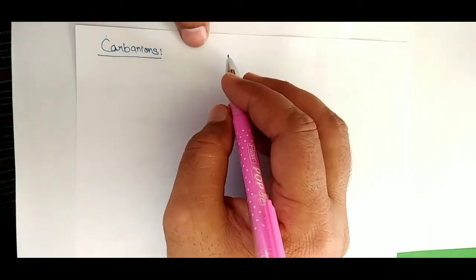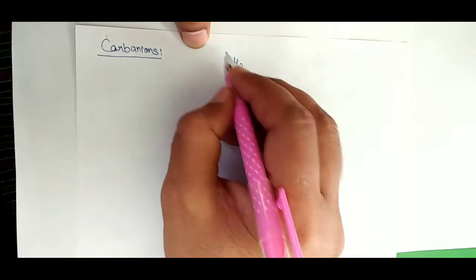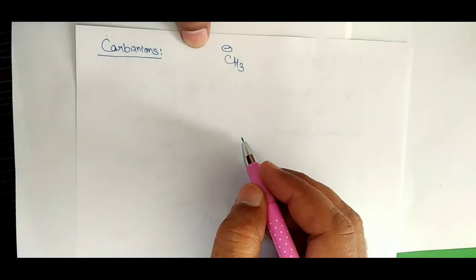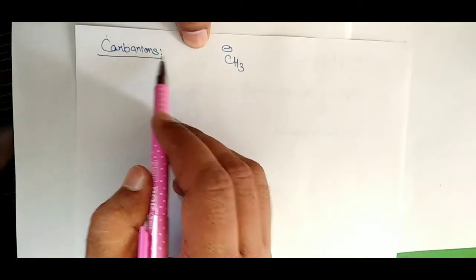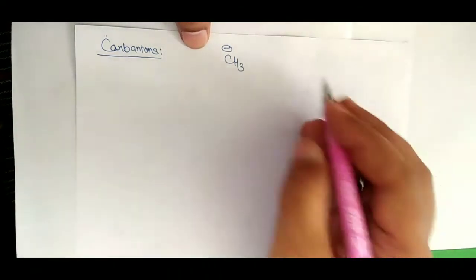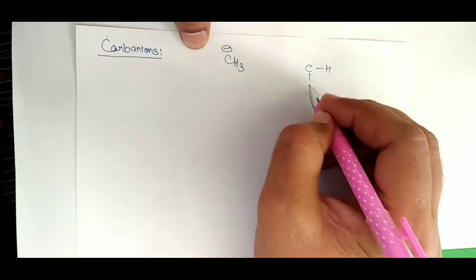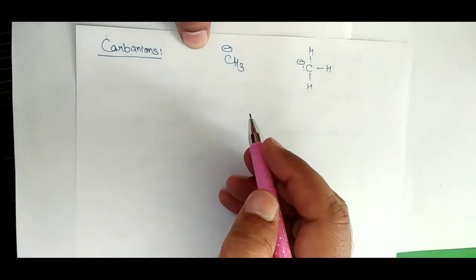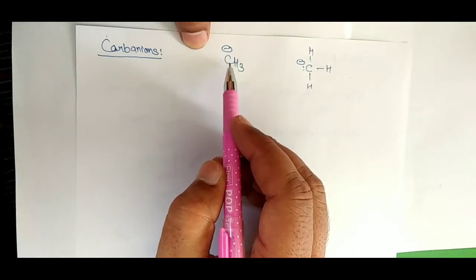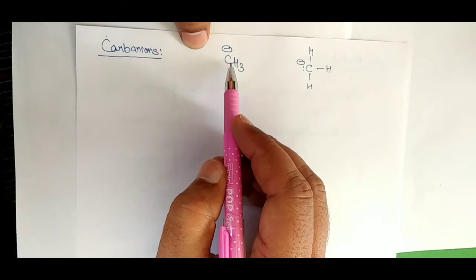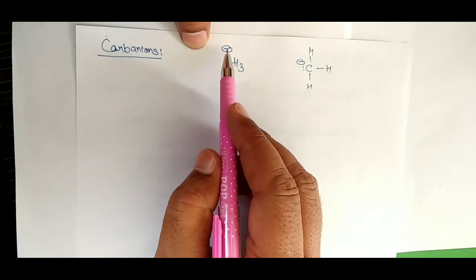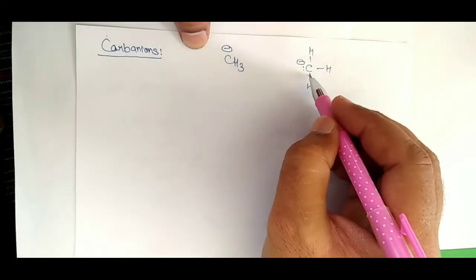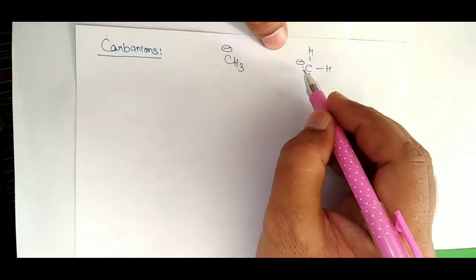So what is carbanion? If I write here, this is CH3 negative. This is the best example of carbanion. So I will explain and define from this example. The carbanion is a chemical reactive species carrying the negative charge on the carbon and having 8 electrons in its valence shell.